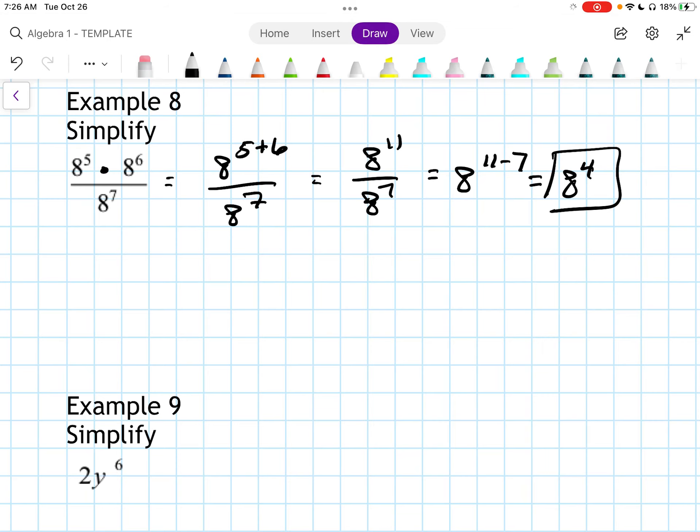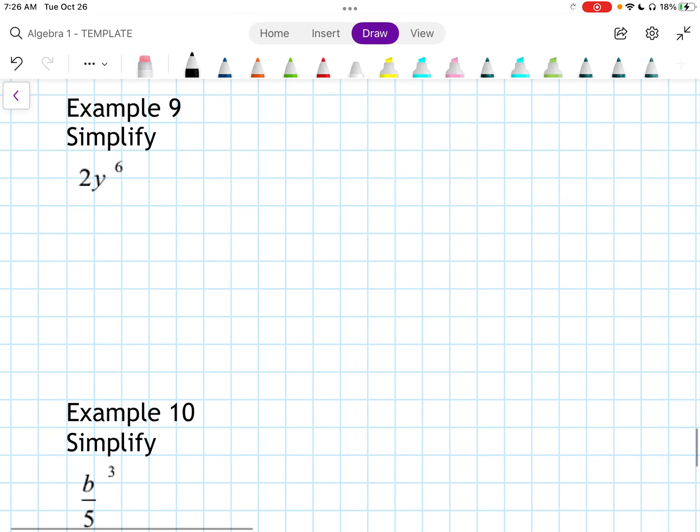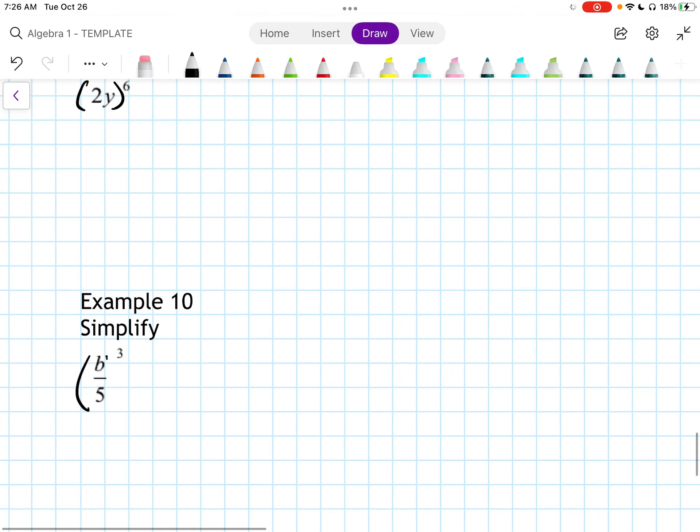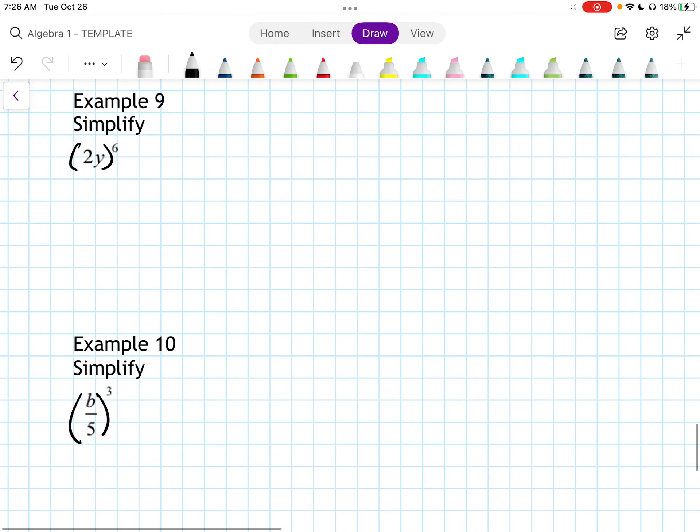The last two examples, we've already done ones like this. If you'd like to do them on your own, you can. This is 2y to the 6th, and b over 5 to the 3rd. Your answers should be, if you were to work these out on your own, would be 64y to the 6th, and b cubed over 125.